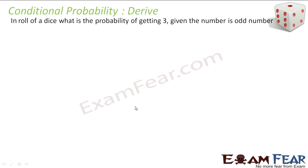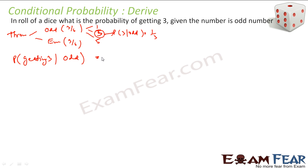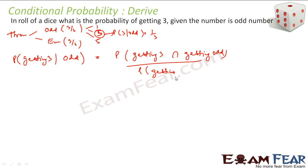Let us take the example of rolling a die. We define the probability of getting three given it is an odd number. When you throw a die, you can get odd (one, three, five) or even. Probability of odd is three by six, probability of even is three by six. From the odd numbers, the probability of getting three given odd was one by three — there are three possible odd outcomes.